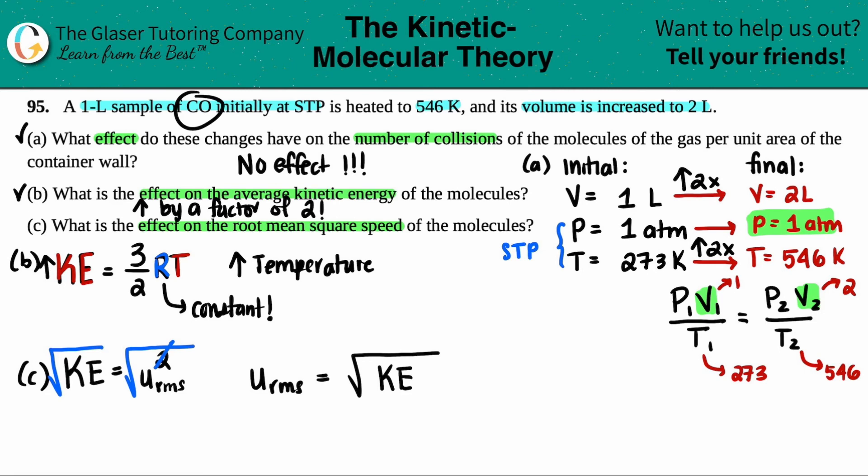And if we did want to solve for u, the root mean squared, this would just be equal to the square root of the kinetic energy. And since our answer in B was that it would increase by two times, the kinetic energy would just be a factor of two. So we could insert a two in the kinetic energy. So here we have u rms would be equal to the square root of two.